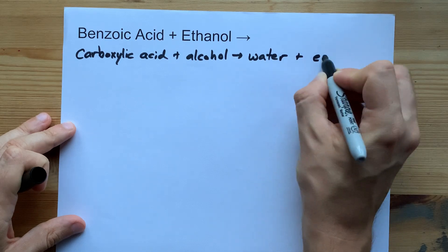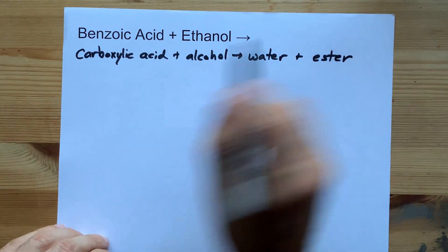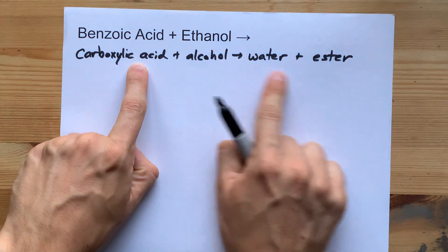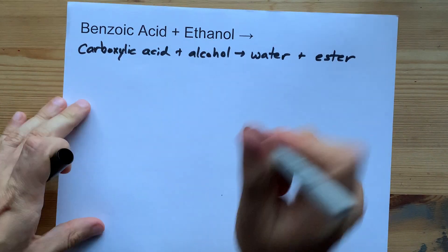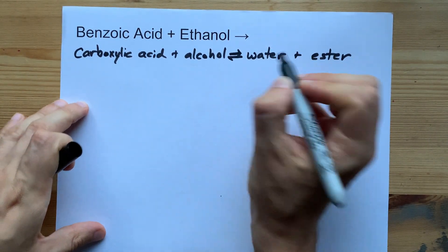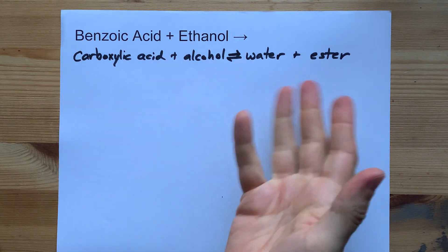You create water in that process. The idea is that carboxylic acid plus alcohol yields you that ester and water. Now it's actually an equilibrium between the two, but that's neither here nor there.